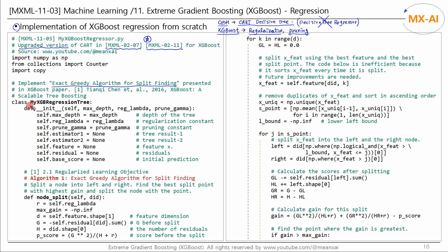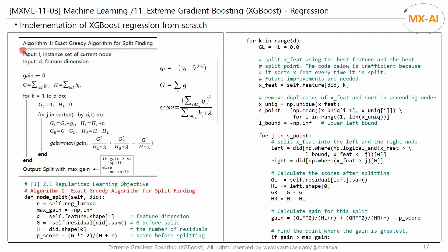First, create a MyXGBRegressionTree class to use as the base learner. Set the tree's depth, regularization constant, and pruning constant. Feature data and residuals are used as the training data. Now let's implement Algorithm 1, the exact greedy algorithm for split-finding, presented in the paper we looked at in the previous video. This algorithm can be easily implemented using the XGBoost library, but to understand more about how it works, let's implement it from scratch and compare results with the XGBoost library.